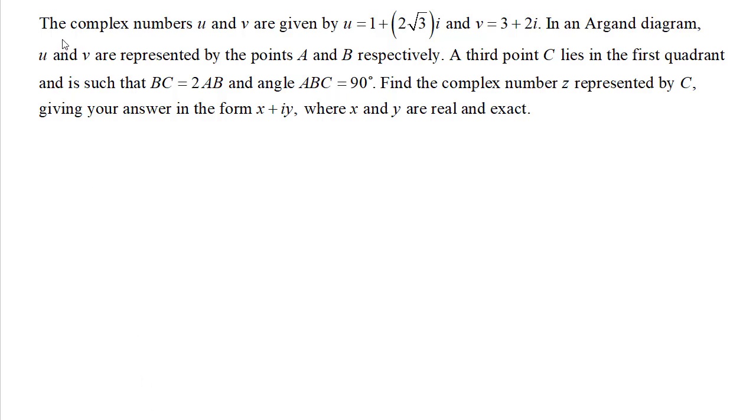So we've got the complex numbers u and v are given by u equals 1 plus 2 root 3i and v equals 3 plus 2i. In an Argand diagram u and v are represented by the points a and b respectively. A third point c lies in the first quadrant and is such that bc equals 2ab and angle abc is 90 degrees.